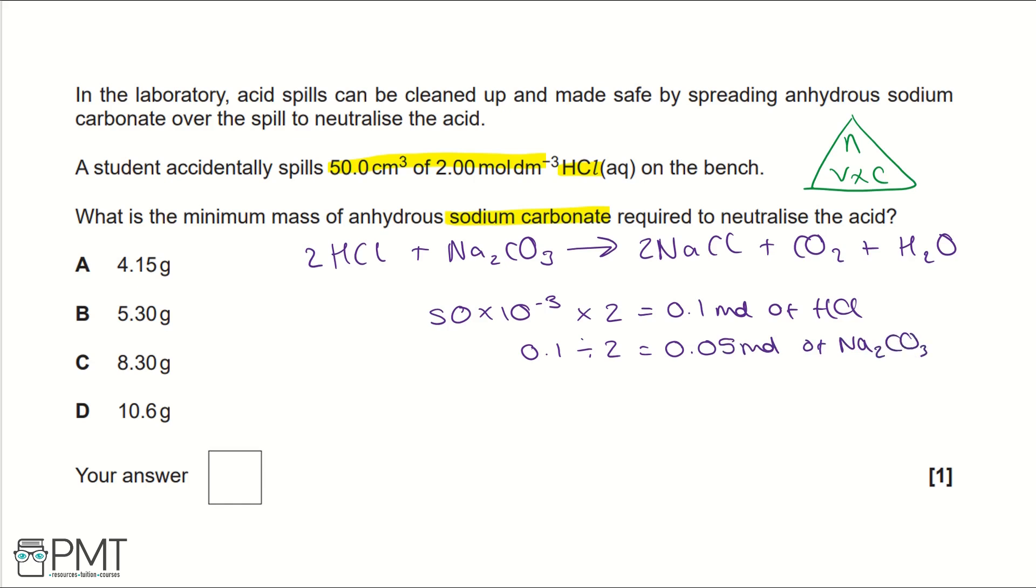Finally to work out mass we're going to use another equation triangle of mass equals moles times relative formula mass. So we've got the moles, we've got 0.05 times the relative formula mass of sodium carbonate that would be 23 times 2 plus 12 plus 16 times 3 and that equals 5.30 grams.